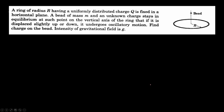A ring of radius capital R having a uniformly distributed charge q is fixed in a horizontal plane as shown in the figure. A bead of mass m with unknown charge stays in equilibrium at a point on the vertical axis of the ring such that if it is displaced slightly up or down it undergoes oscillatory motion. Find the charge on the bead; intensity of gravitational field is g.